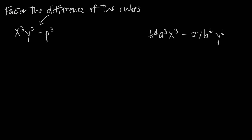We have to have two perfect cubes, which means we need to be able to take the cube root of the whole term. For example, x cubed times y cubed — the cube root of x cubed is x because x times x times x is x cubed. The cube root of y cubed is y because y times y times y gives us y cubed, which means the cube root of x cubed y cubed, the whole term, is those two things multiplied together: xy. The cube root of p cubed is just p. Both of these are perfect cubes and we have a difference, so we know we have the difference of cubes.